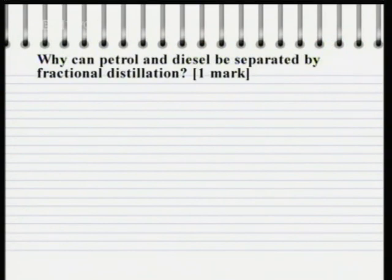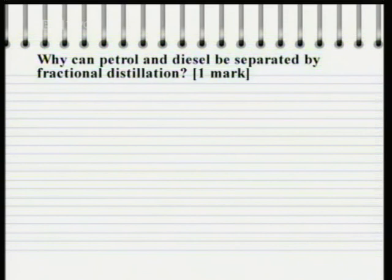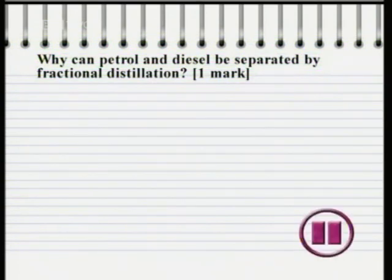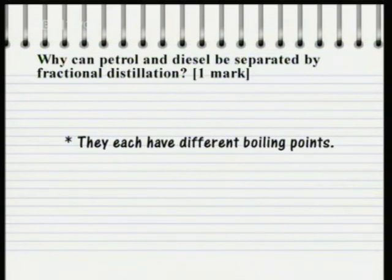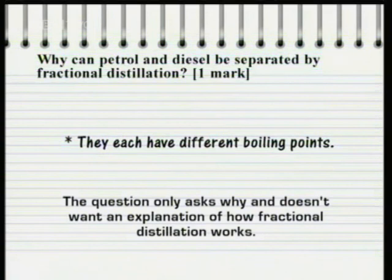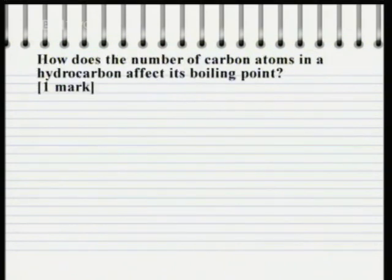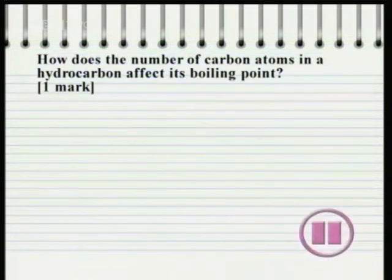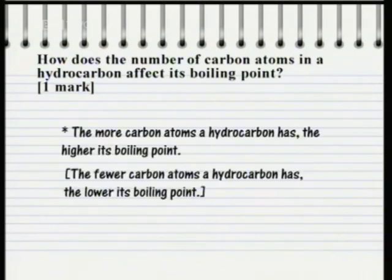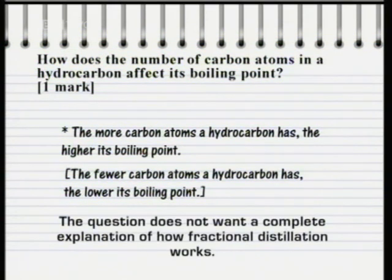Here's a selection of questions you might get about fractional distillation. Why can petrol and diesel be separated by fractional distillation? The answer is that they each have different boiling points. Note that for one mark, the question only asks why, and doesn't want an explanation of how fractional distillation works. Here's a variation: how does the number of carbon atoms in a hydrocarbon affect its boiling point? The more carbon atoms a hydrocarbon has, the higher its boiling point. It would also be correct to say that the fewer carbon atoms it has, the lower its boiling point. Again, for one mark, the question does not want a big explanation of how fractional distillation works.